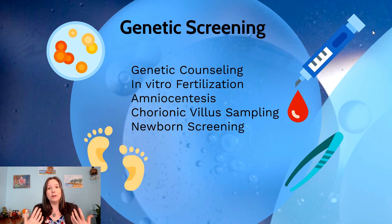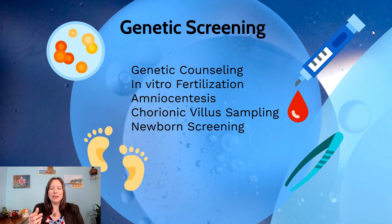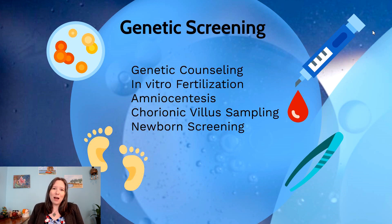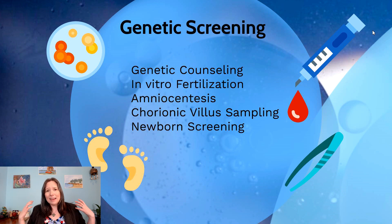If a pregnancy is already underway and there is concern about a genetic disorder, there are two main possibilities. The first is amniocentesis, where a small amount of amniotic fluid is sampled — fetal tissue in the fluid allows DNA testing. This can be done via a syringe guided by ultrasound or through the vaginal canal. The second is chorionic villus sampling, which is similar but samples the placenta instead; a DNA test on placental tissue can also identify genetic atypicalities.